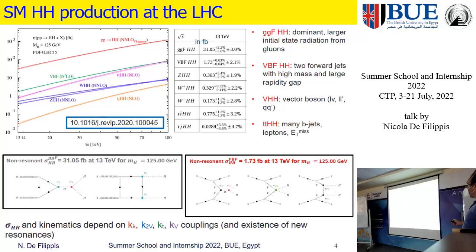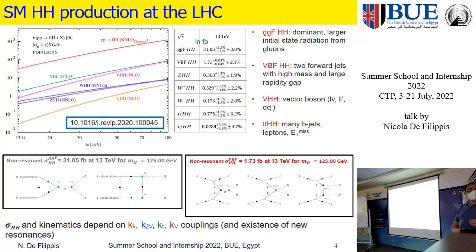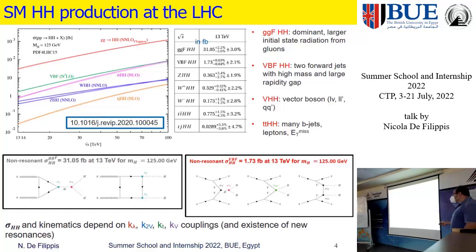There is also an effort to evaluate the cross-section not only when kappa_lambda equals 1, which corresponds to the standard model, but also for deviations from 1 which signal new physics. You compute the cross-section as a function of kappa_lambda: for gluon-gluon fusion, at kappa_lambda equal to 2.4 there is a minimum; for VBF production, the minimum is around 1.65.